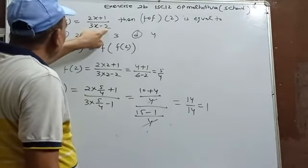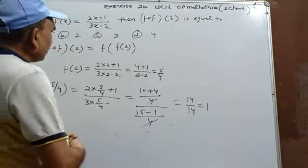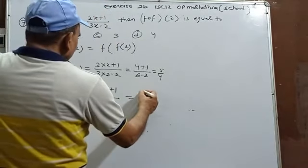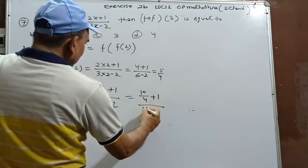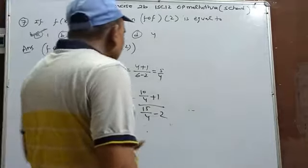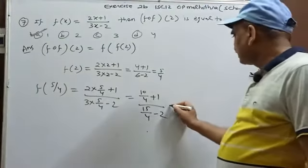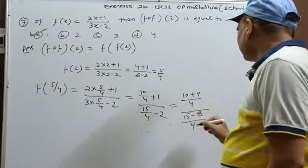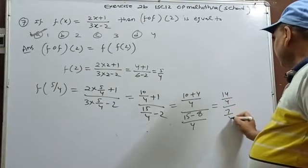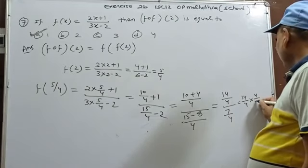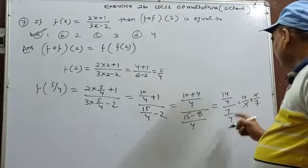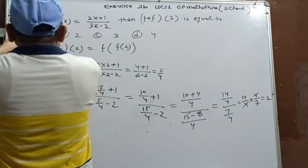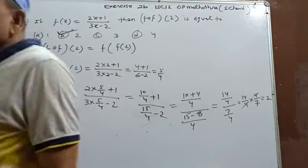Computing: numerator=(10+4)/4=14/4, denominator=(15-8)/4=7/4. So f(5/4)=(14/4)÷(7/4)=14/7=2. The answer is 2, which corresponds to option B.